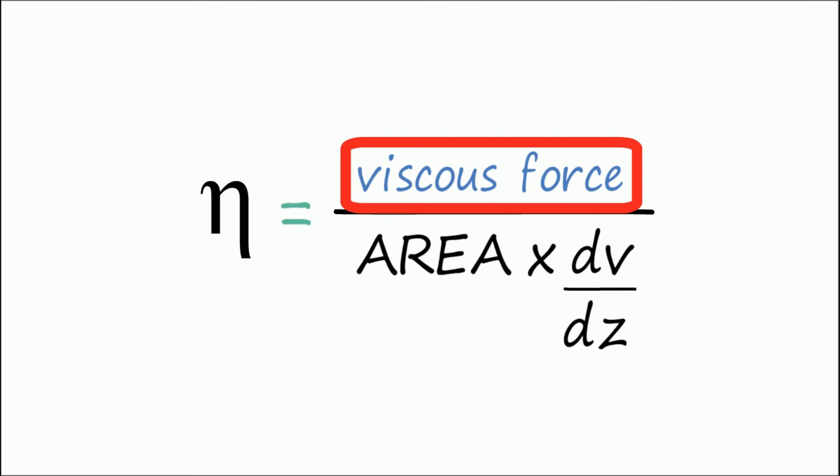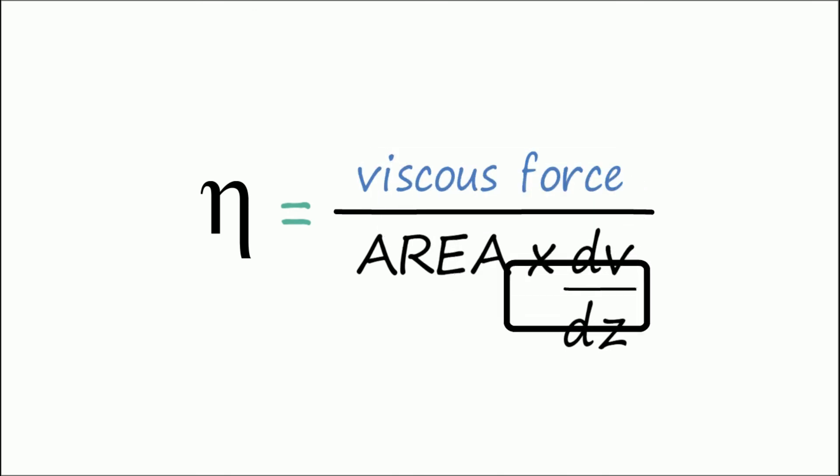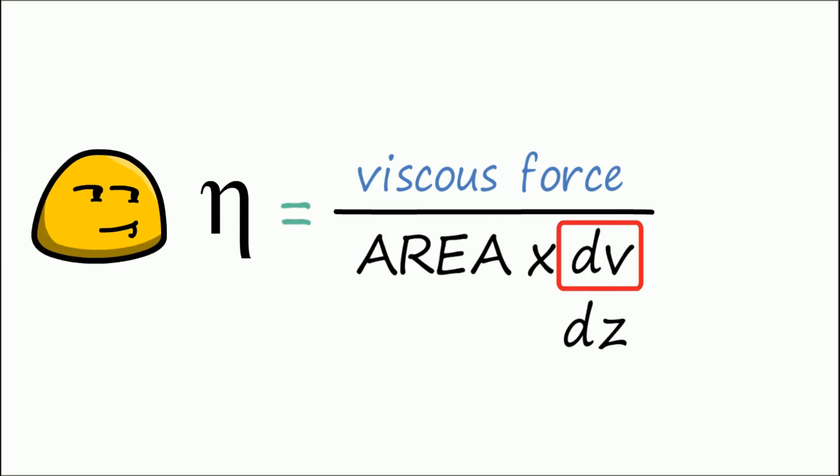So this means that we have to find what force the liquid is moving with, the distance between the horizontal fluid layers, and divide them by the area of contact between the two layers and the difference in velocity between those two layers. Hence we find the coefficient of viscosity.